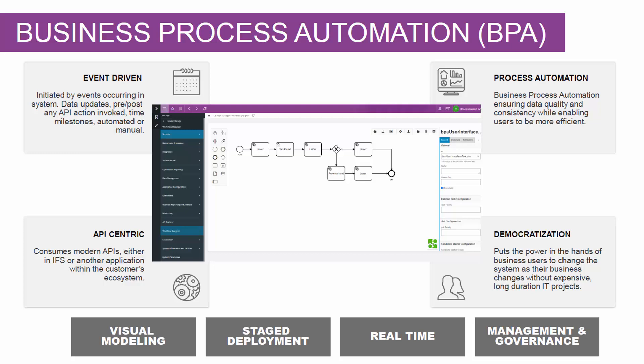The workflow designer is found in the solution manager as part of the event framework when licensed. You can invoke these business process automations from a custom event. There are currently three process automations available: validation, user interaction, and process enrichment. This is a more visual way of modeling a process in the system, and we use stage deployment — once you've deployed it to the server, it becomes active in real time for users.